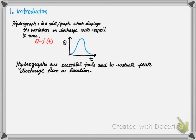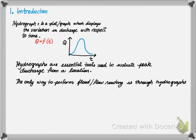First, a hydrograph is an essential tool to evaluate peak discharge for a location. The peak discharge will provide sizing requirements for channels, culverts, bridges — specifically the low cord of a bridge — and so on. The only way to perform flow or flood routing is through hydrographs. Routing flows through a watershed is essential and hydrograph analysis can be used to do this. As the size of a watershed increases, the rational method will over-predict the design flows due to its inability to accurately account for storage.